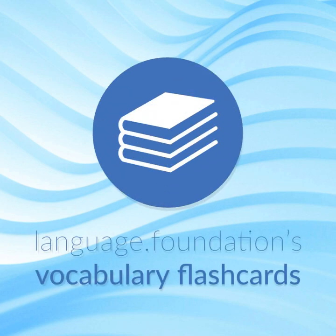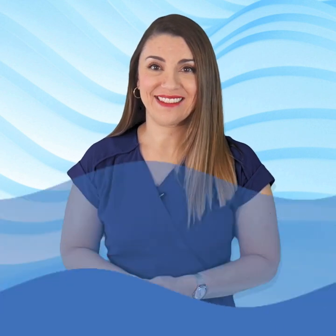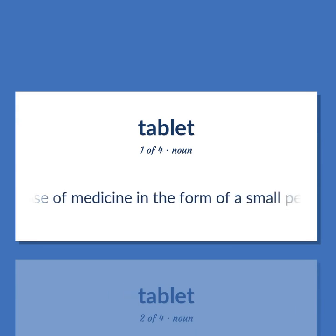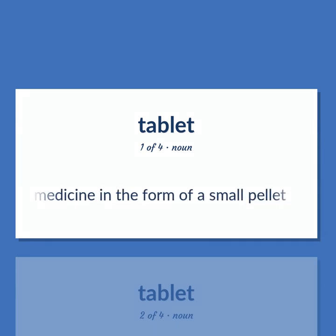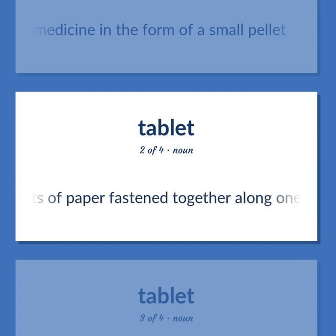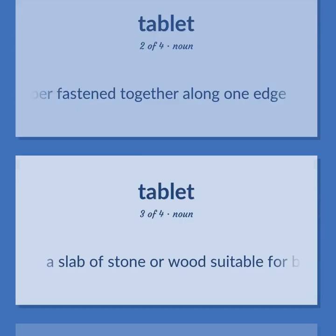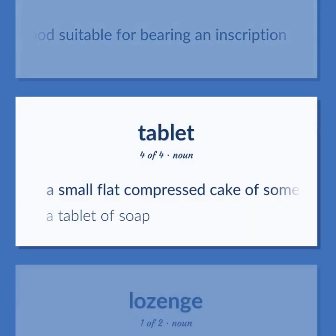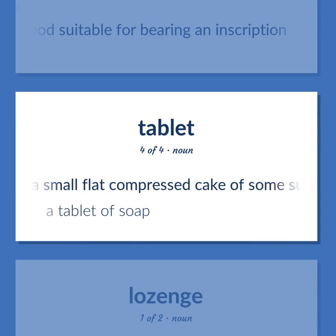Language Foundations Vocabulary Flashcards helping you achieve understanding. Pill: a dose of medicine in the form of a small pellet. A number of sheets of paper fastened together along one edge. A slab of stone or wood suitable for bearing an inscription. A small flat compressed cake of some substance. A tablet of soap.